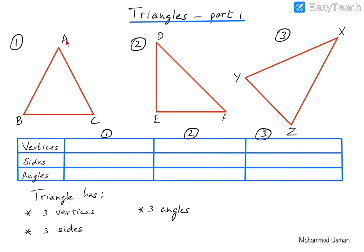For triangle number one, we have three vertices A, B and C. For triangle number two, the vertices are D, E and F — vertices means the corners of the triangle. And for triangle number three, the vertices are X, Y and Z. So we have defined what are the vertices of the triangles.